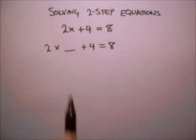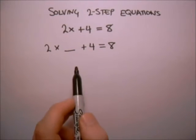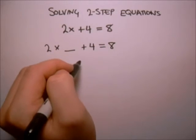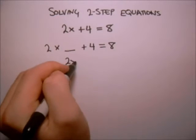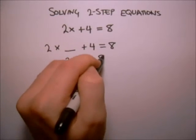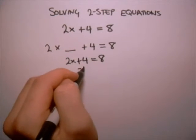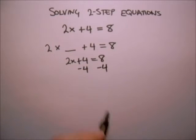In order to figure out what we need in this blank, what we can do is subtract 4 from both sides. So from our original equation, 2x plus 4 equals 8, I want to subtract 4. I do this to get the x part by itself.